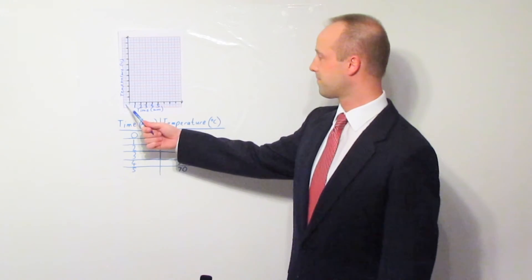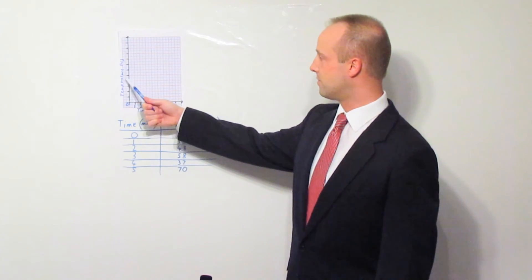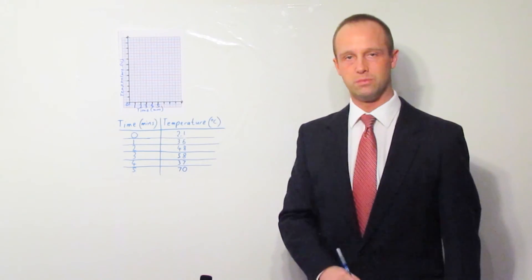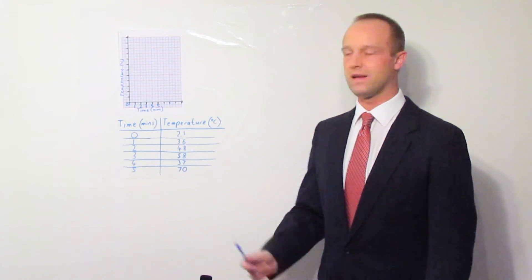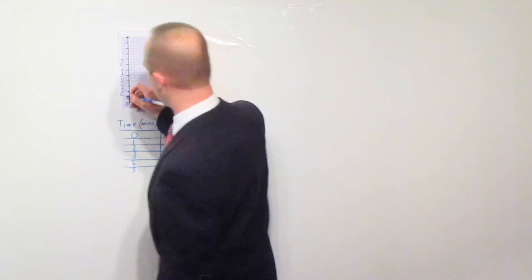So, ones, twos, and fives haven't worked. Let's go up in tens: ten, twenty, thirty, forty, fifty, sixty, seventy. It goes more than halfway across the page and it gets up to our biggest number.